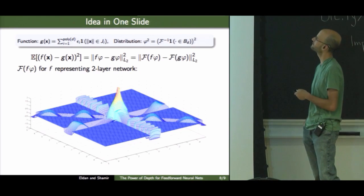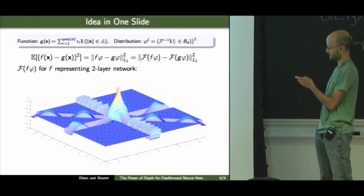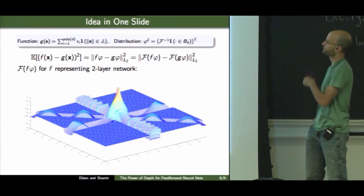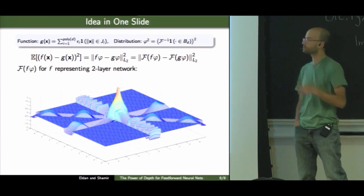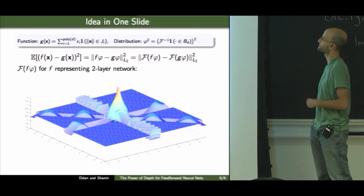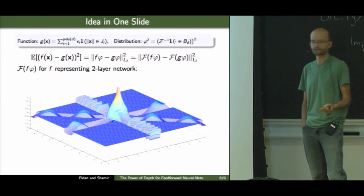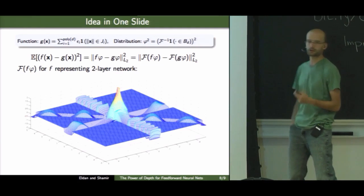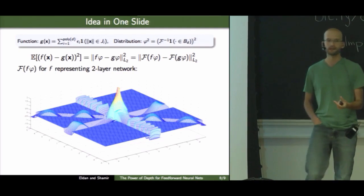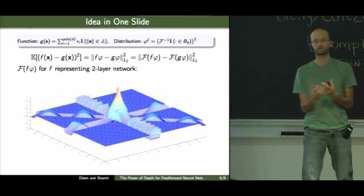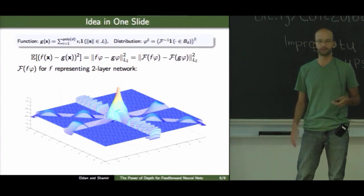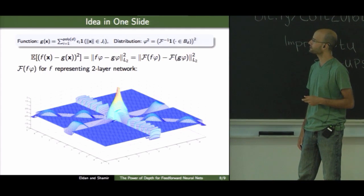We can write it, if we have some distribution, as the L2 distance between f times phi, where phi is the square root of the density, minus g times phi. And then there's this basic result in Fourier analysis that the L2 distance is preserved if we take a Fourier transform. So essentially, we just need to understand what is the structure under a Fourier transform of two and three layer networks.